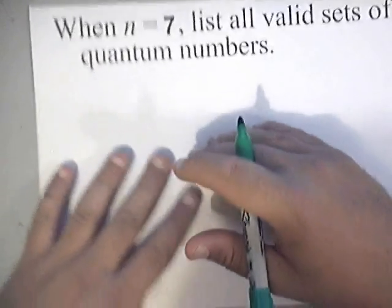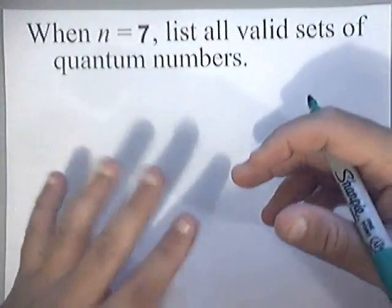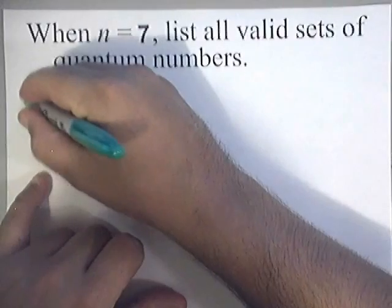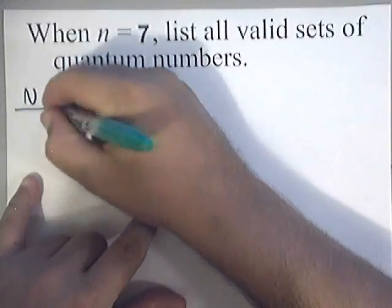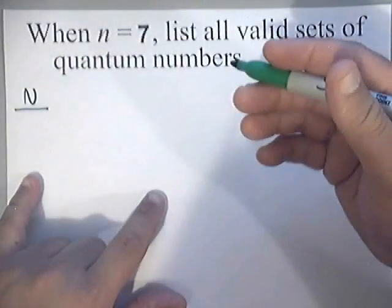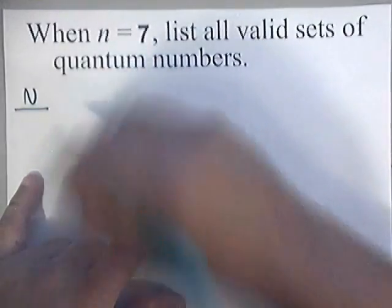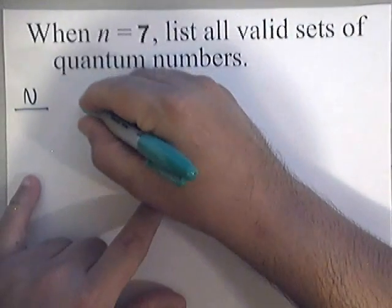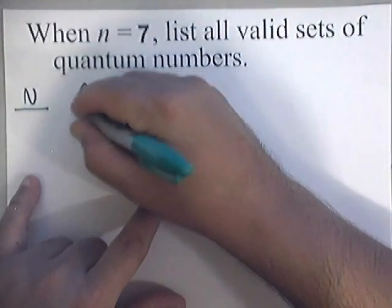Well, the first thing you'll do is you'll start with four columns. You'll start with the n column, which is the principal quantum number. Then you'll start with the L column, which is the orbital quantum numbers.